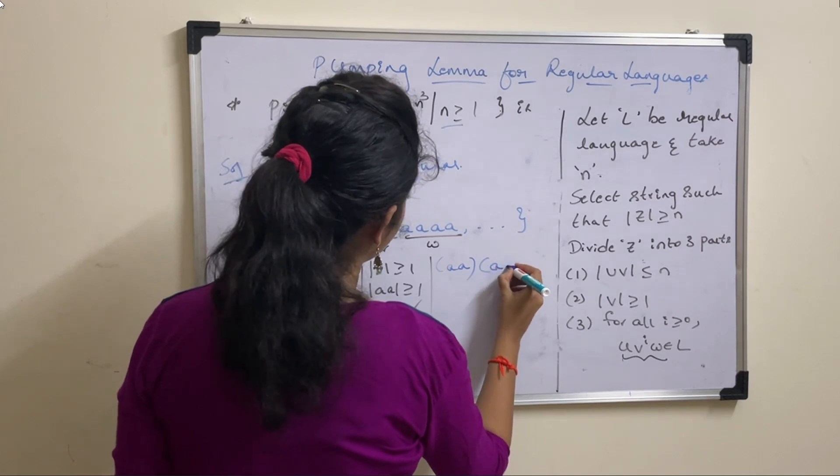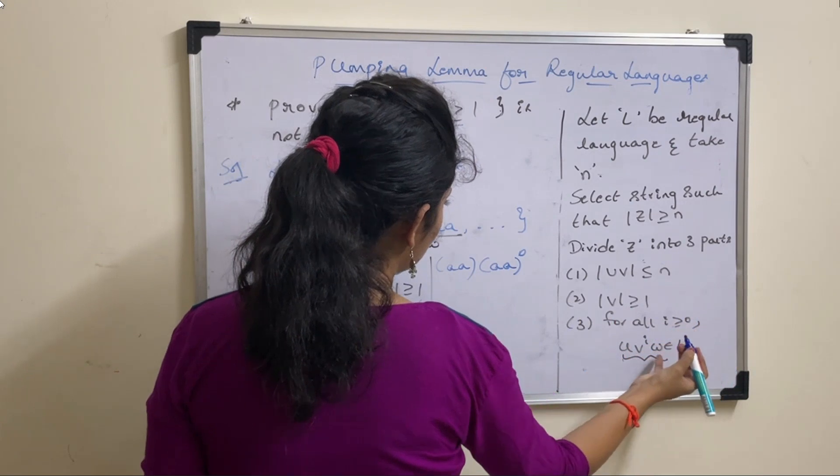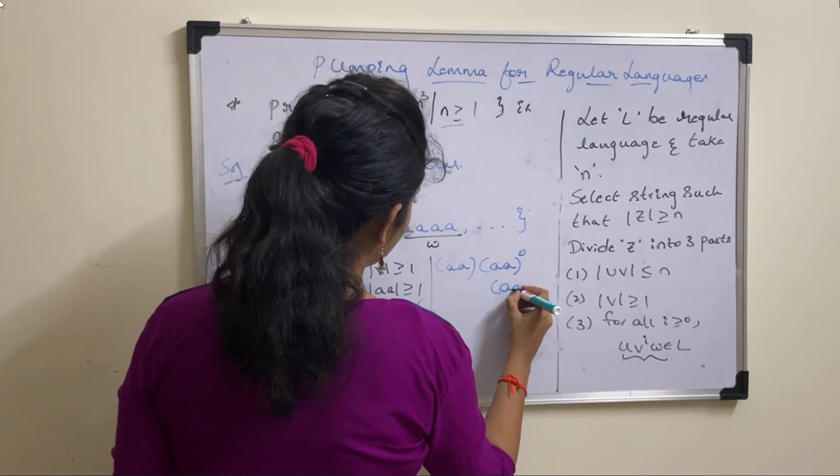V value is a a power 0. You need to take i value as 0, starting with 0. Next, w is 4 a's.